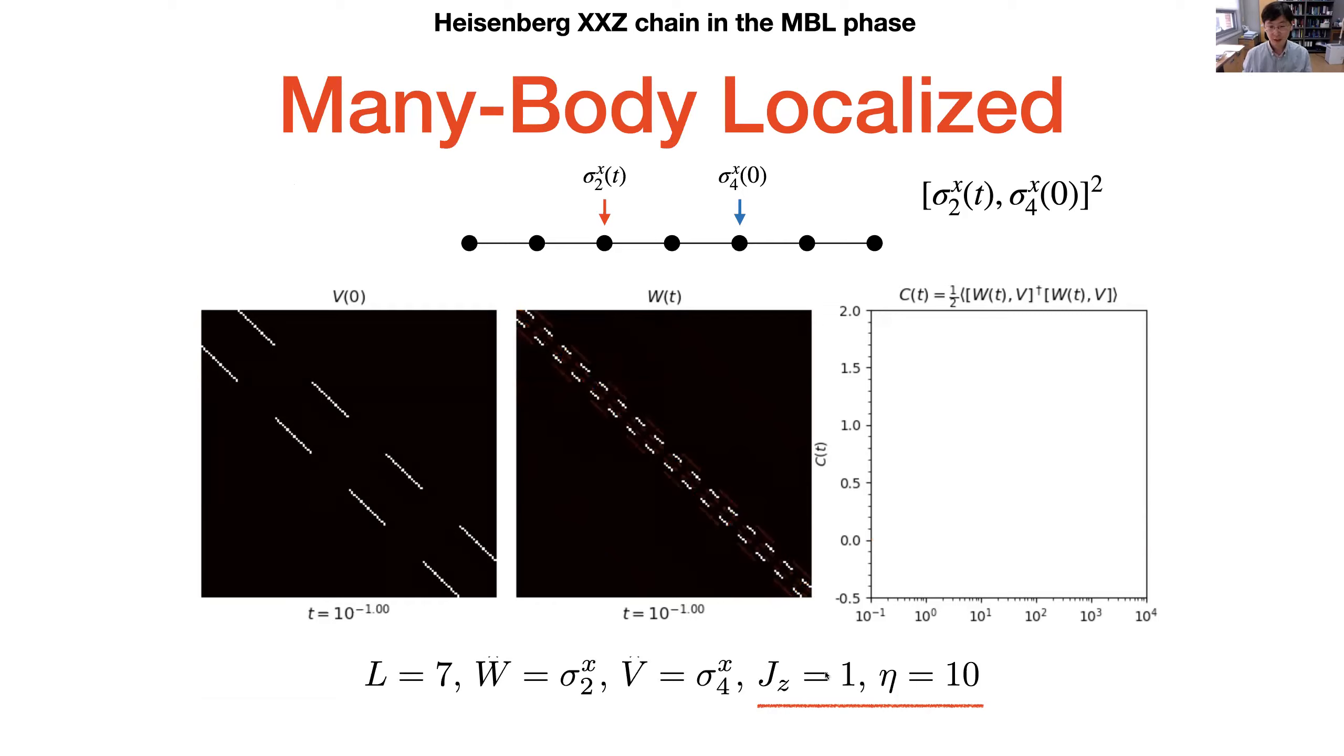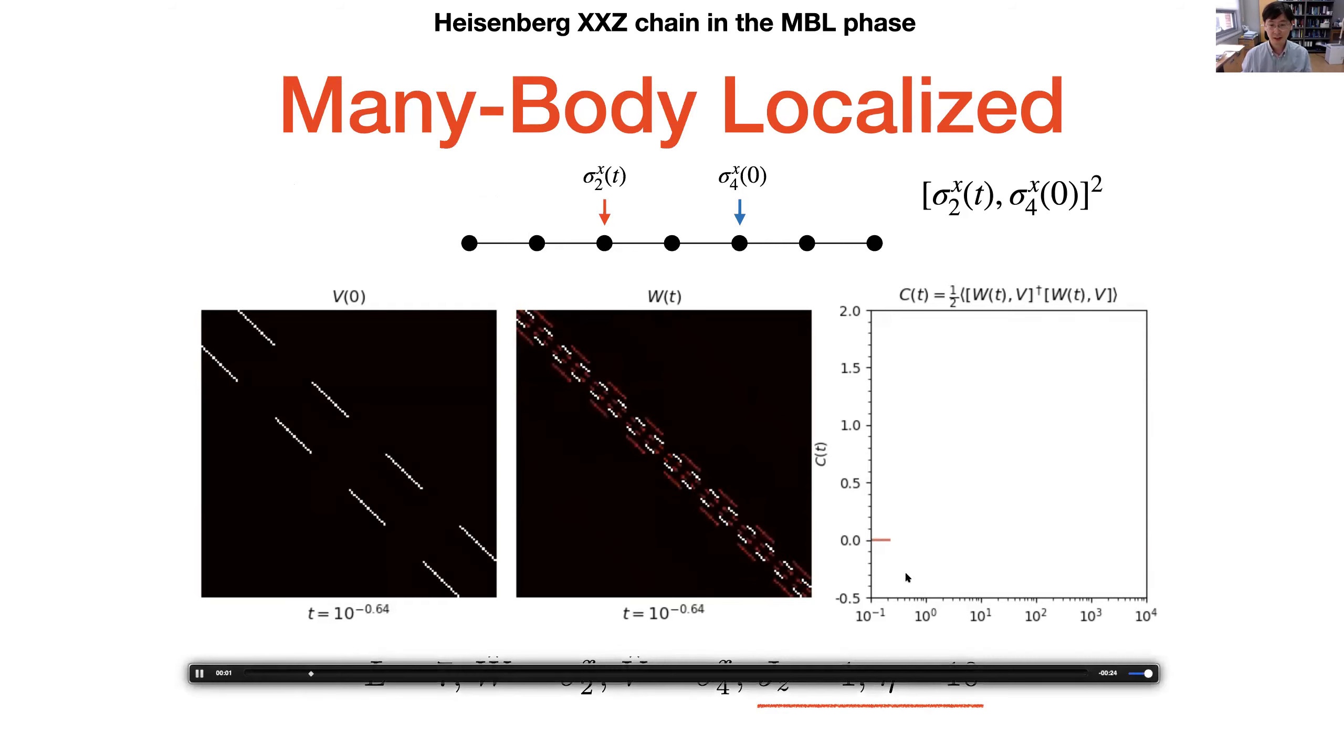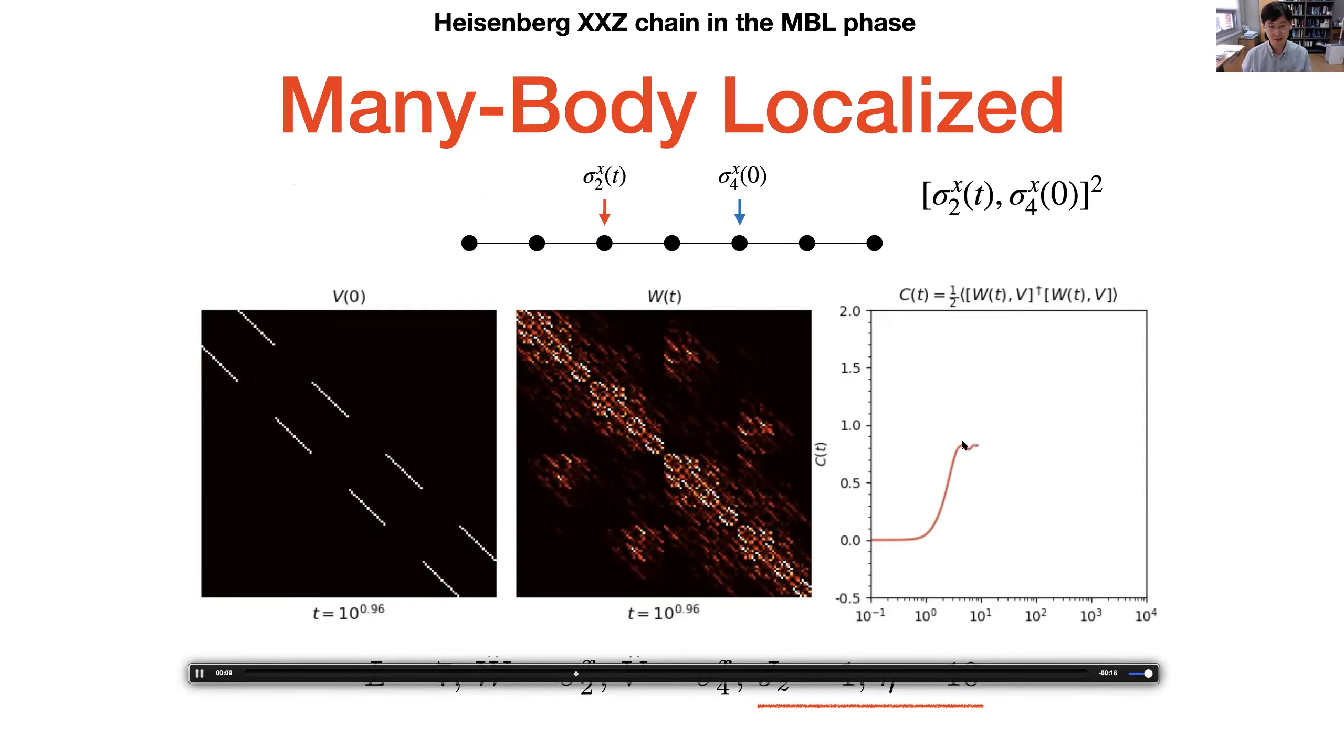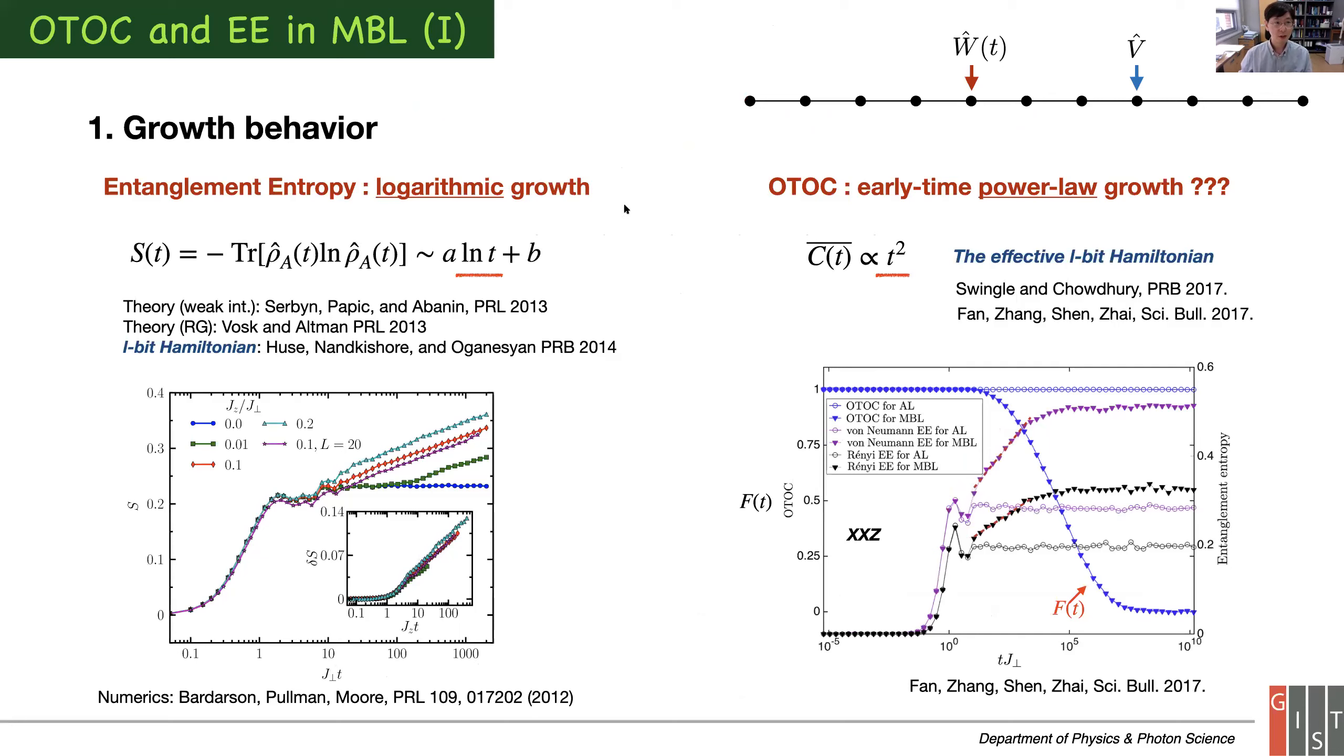In the many-body localized phase where I turned on interaction with pretty strong disorder, notice it's logarithmic time scale - it actually increases even if disorder strength is quite large. It stays at zero at very early time but eventually increases, distinguishing MBL from Anderson localization. The standard explanation is dephasing phenomena, which is like many-body correlations.